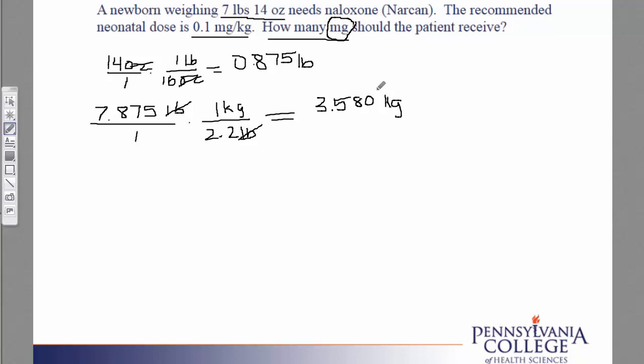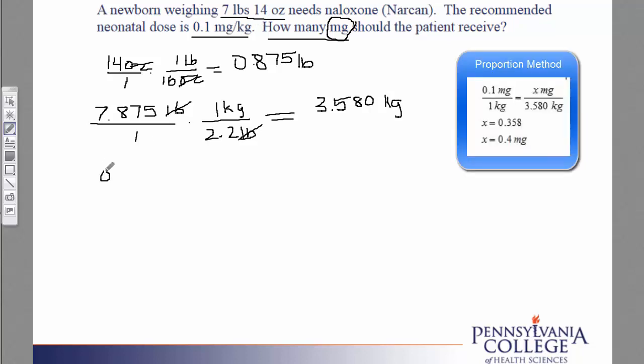My next step is to actually figure out the dose. I figured out the weight, and so I take the recommendation of 0.1 milligrams per kilogram, and I multiply that times the patient's weight. Kilograms will cancel.